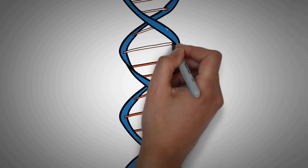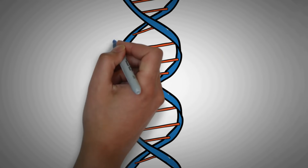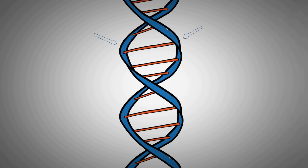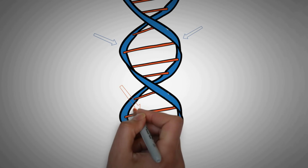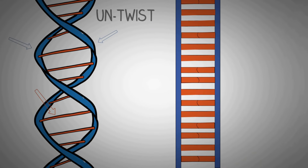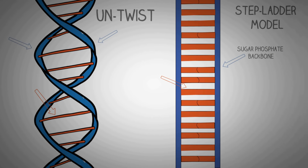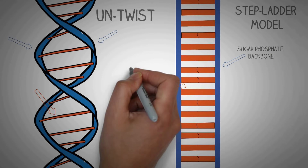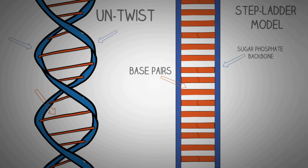If we zoom into the double helix model of the DNA, you can clearly see that it consists of two blue lines twisted around each other, connected by orange lines in the center. If we untwist the double helical model we get what is known as the stepladder model of the DNA. The blue vertical lines represent the sugar-phosphate backbone, and the orange horizontal lines represent the base pairs.